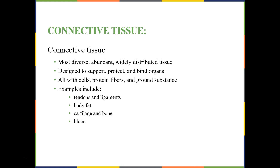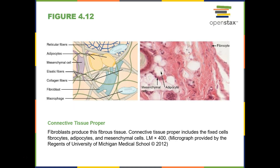There are a lot of different types of connective tissues, and we're going to talk about each of them. First, let's talk about some of the cells that are part of connective tissue. In connective tissue, we have fibroblasts that produce different types of connective tissue fibers. One of the most important — one of the strongest fibers — is collagen fiber. Fibroblasts produce collagen fibers.